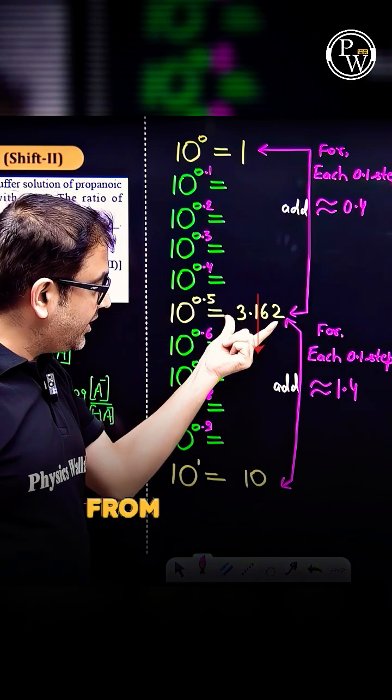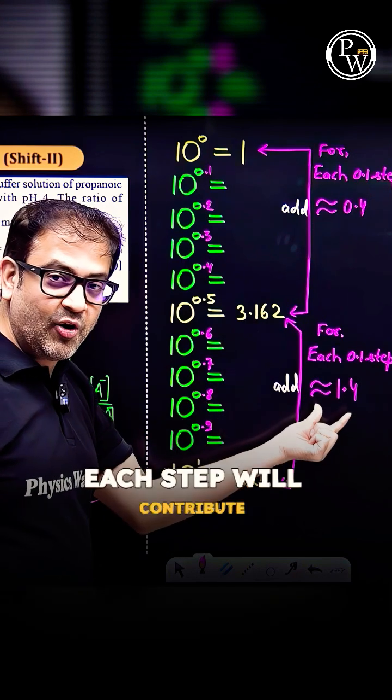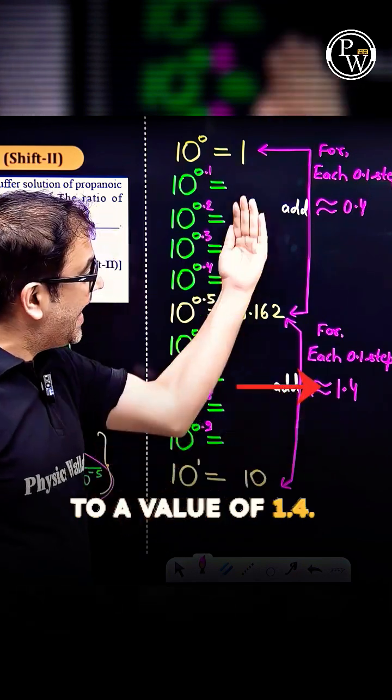Similarly, from 3.162 till 10, there are 5 steps of 0.1 each. Each step will contribute to a value of 1.4. Add these values.